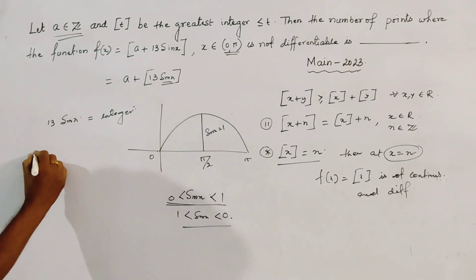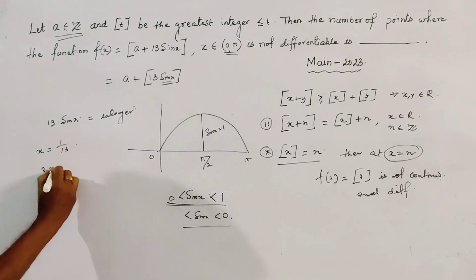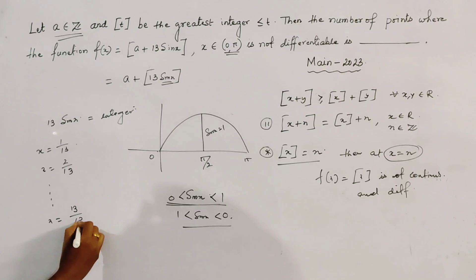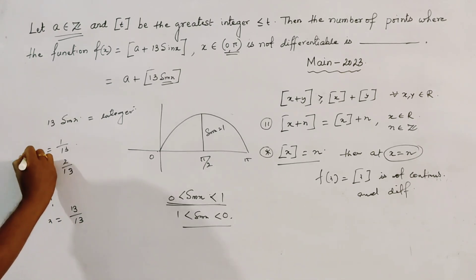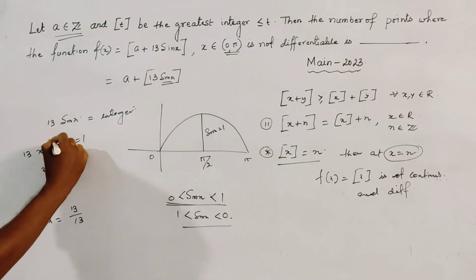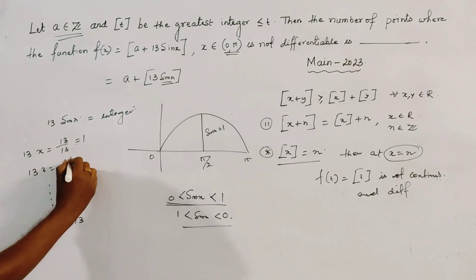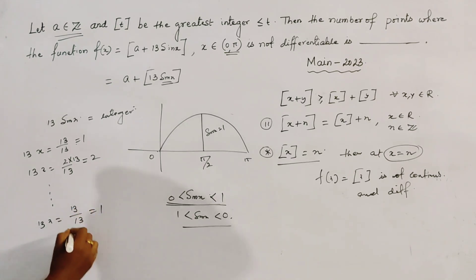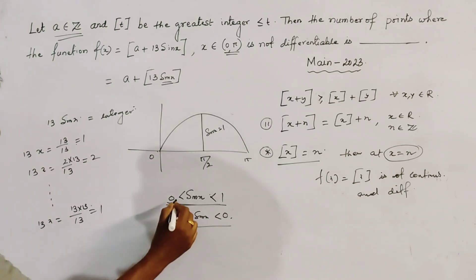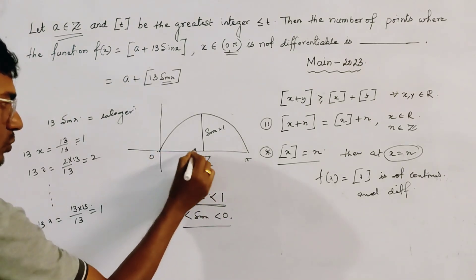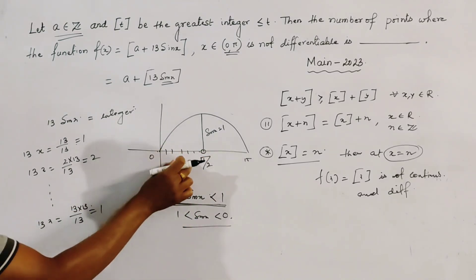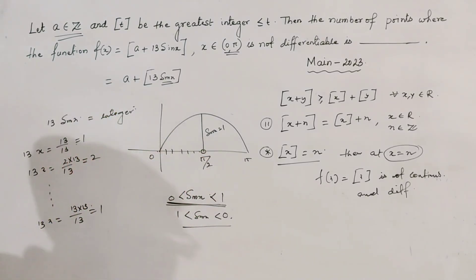It is clear that if sin x equals 1/13, 2/13, up to 13/13, we get 13x equal to 1, 2, and so on up to 13. In the interval [0, π/2], there are 13 such values — including the endpoint — at which 13 sin x is an integer.